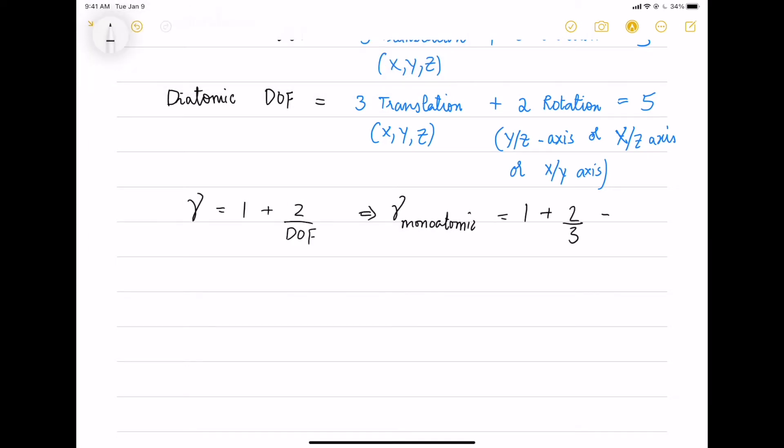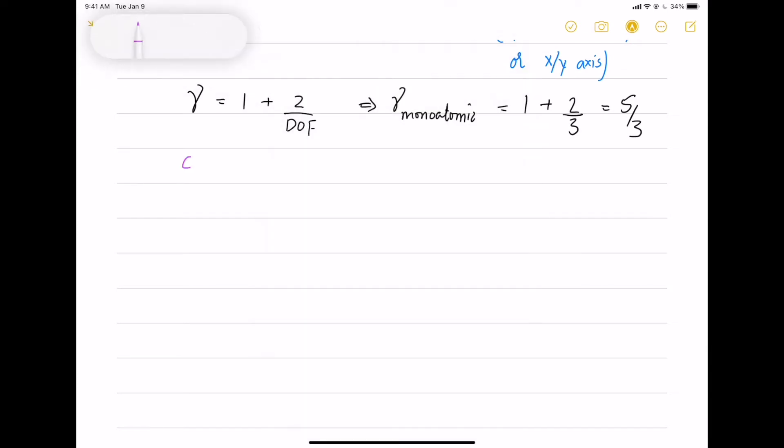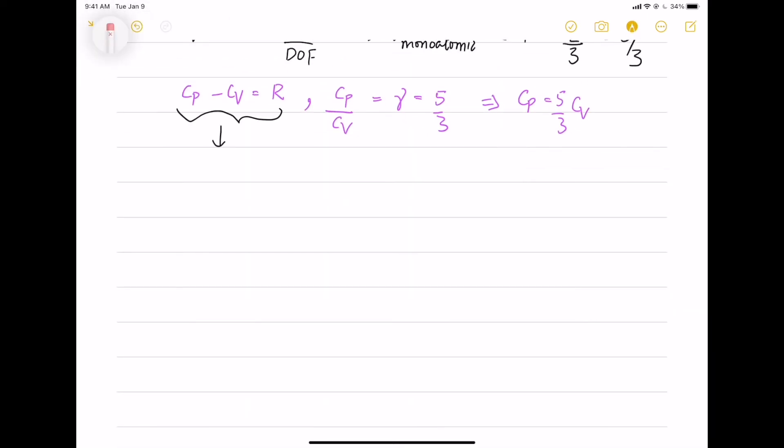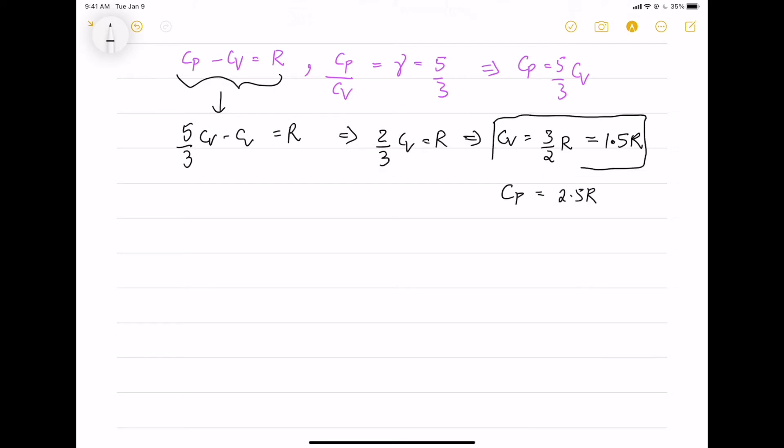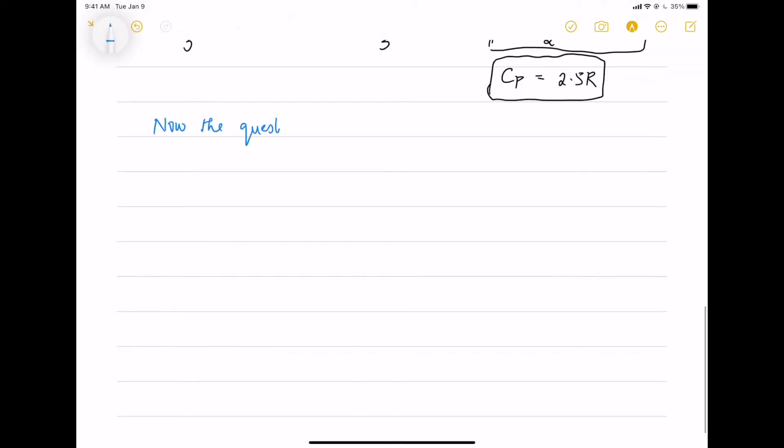For monoatomic, gamma equals to five by three and Cp by Cv is equal to five by three. We have this relation. So, we will have Cv equals to three by two R equals to 1.5 R and Cp is 2.5 R.